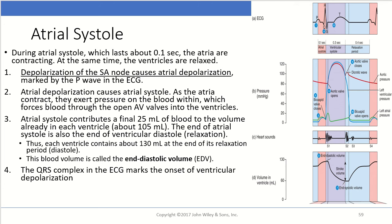This brings the total to about 105 mils. The end of atrial systole is also the end of ventricular diastole, so each ventricle contains a total of about 130 mils at the end of its relaxation period. This blood volume is called the end diastolic volume. The QRS complex found in the ECG marks the onset of ventricular depolarization.